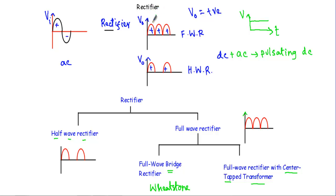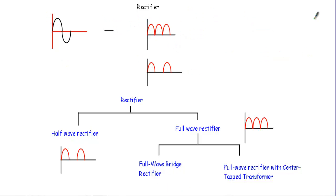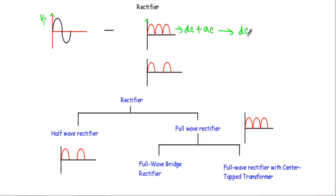Now let me run a simulation so you can have a better understanding of the rectifier circuit. I will show you that an alternating waveform can be converted into a pure DC waveform using a rectifier circuit. The rectifier takes an alternating input and gives us a pulsating output waveform that contains both DC and AC components. From this we can obtain a pure DC waveform using a filter and voltage regulator network.